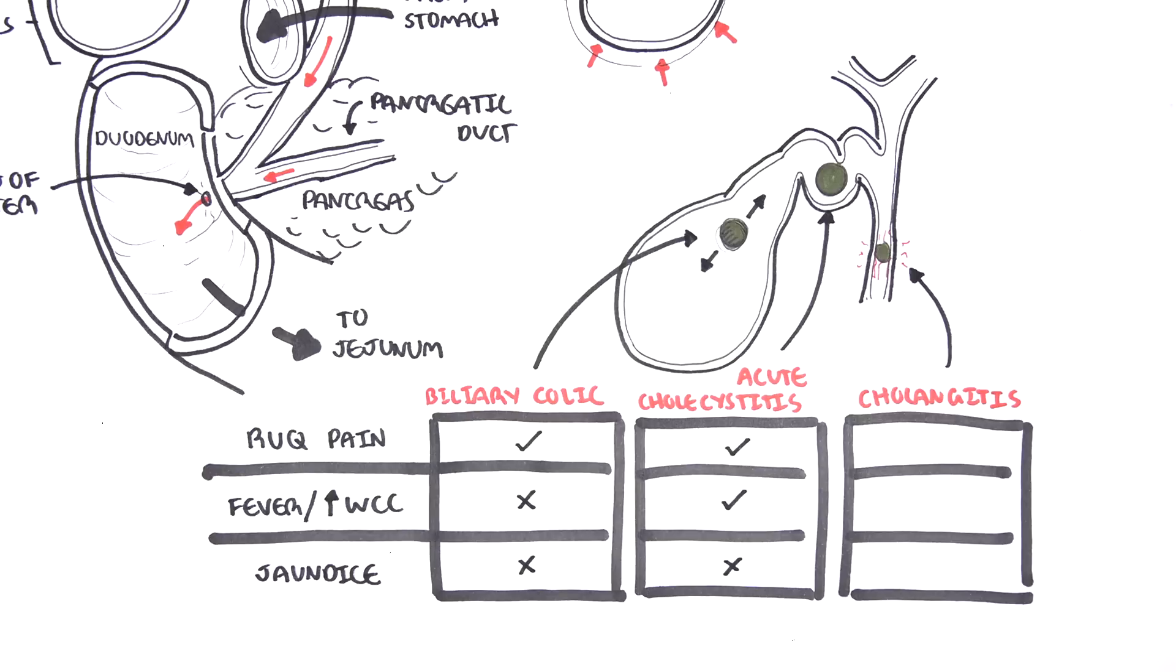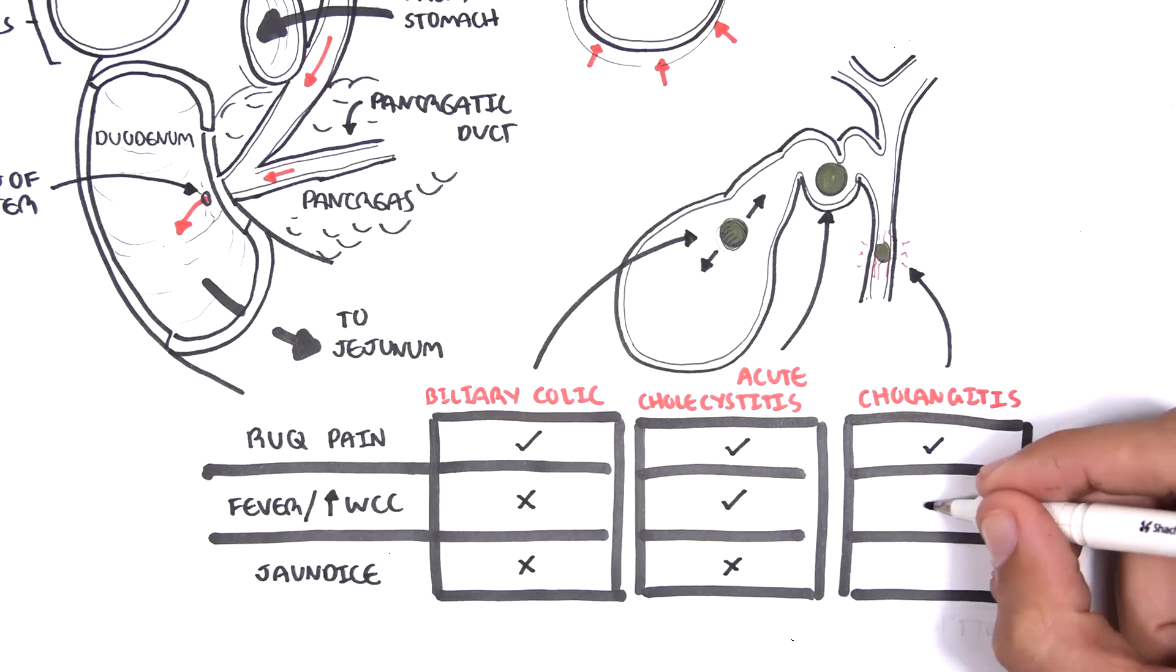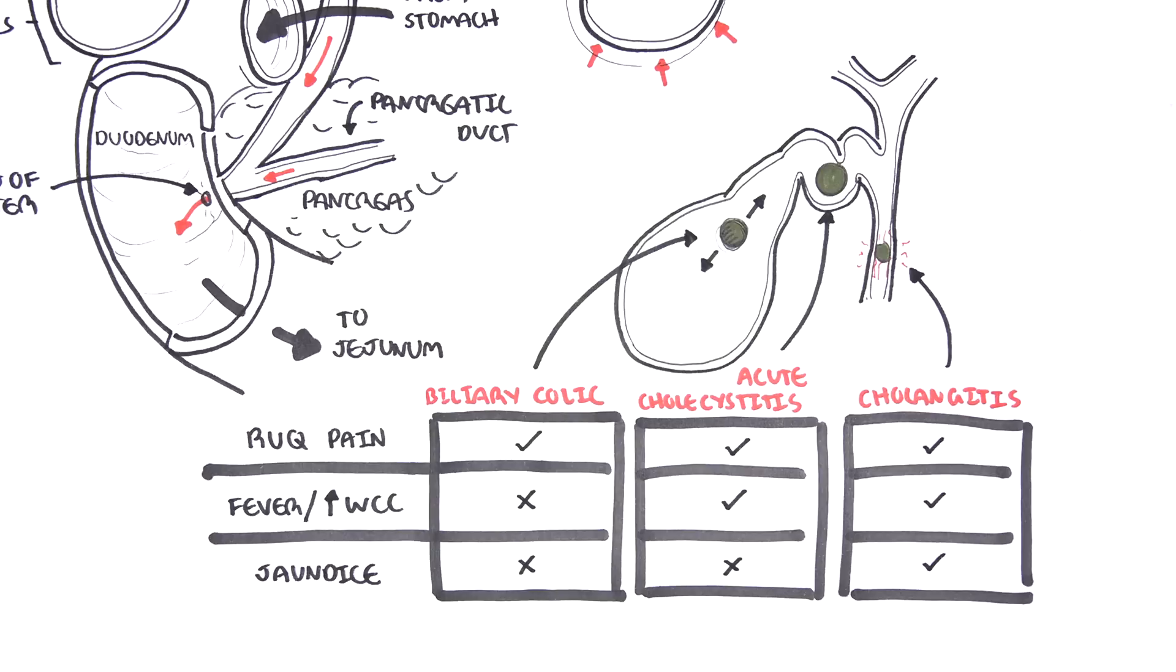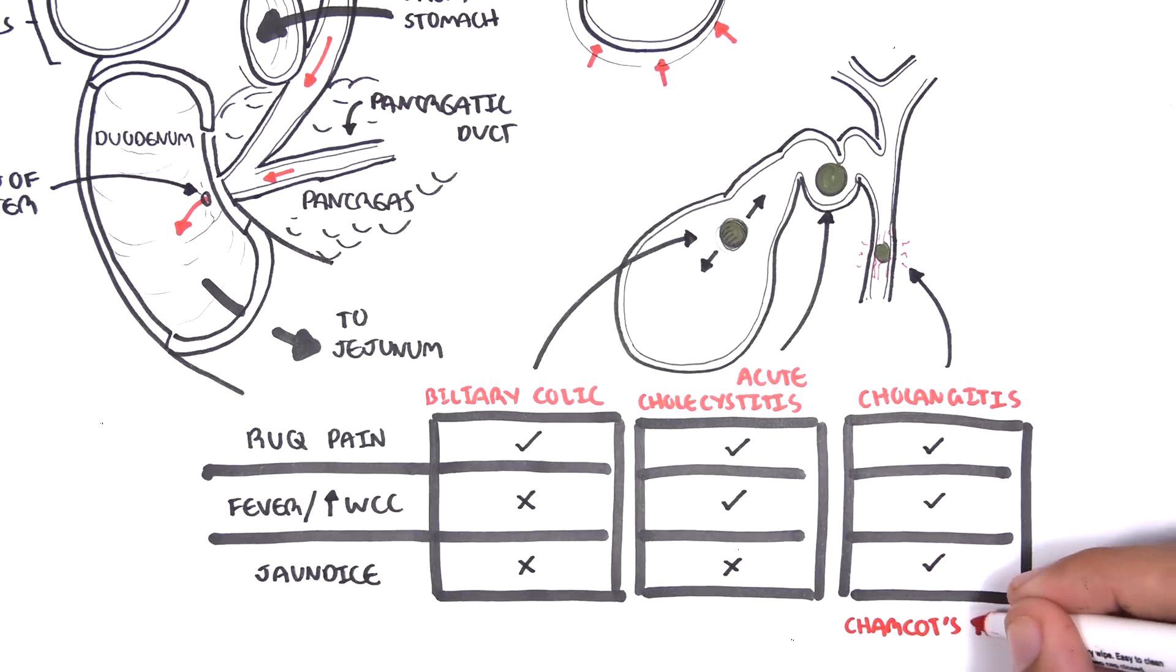And jaundice, yellowing of the skin. These three findings make up what's called Charcot's triad.